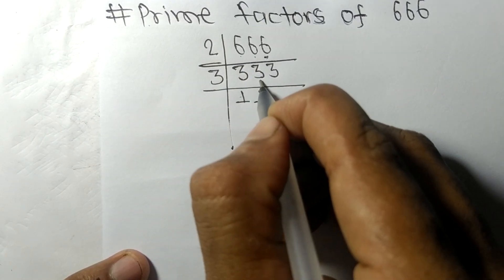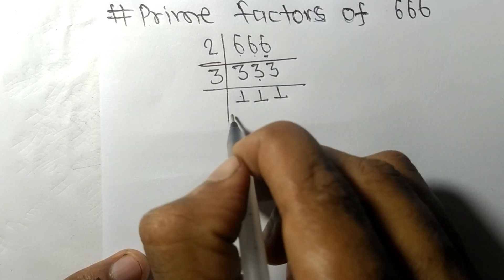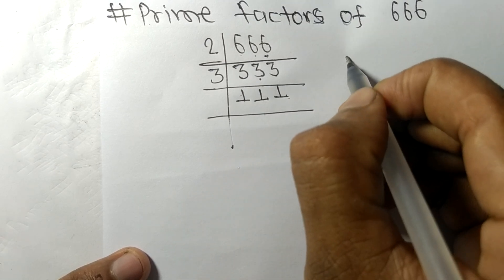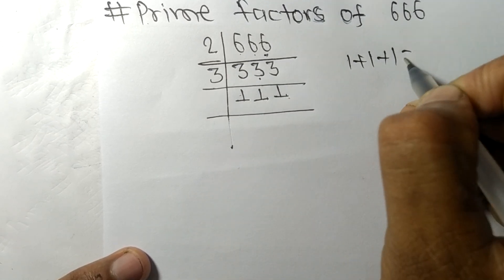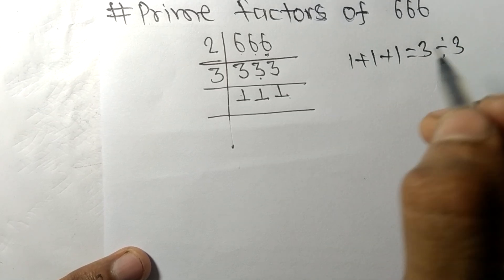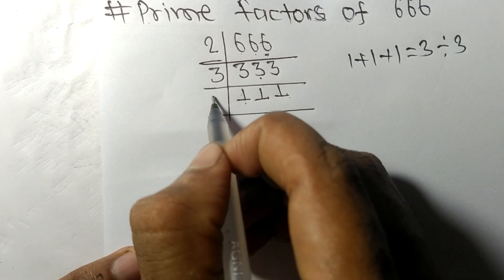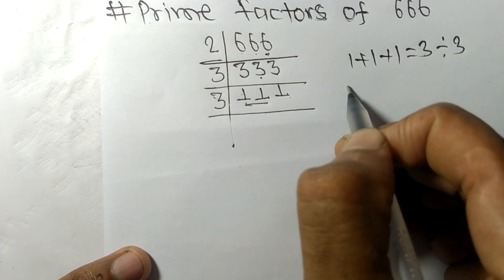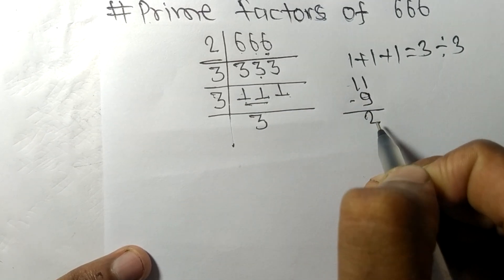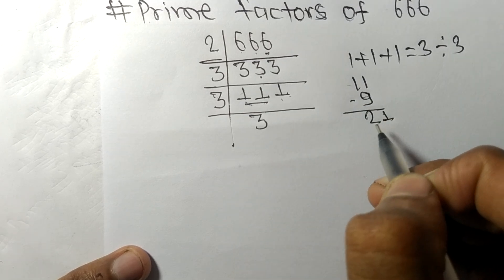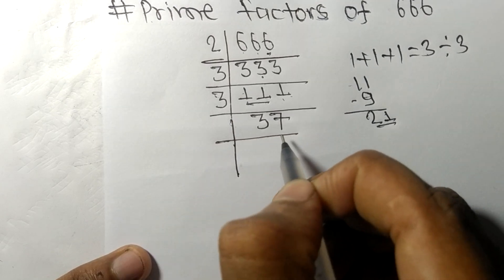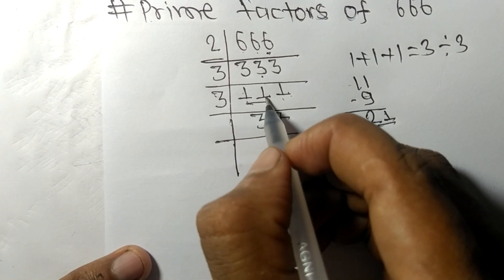Dividing 333 by 3 gives us 111. When we add all the digits of 111, that is 1 plus 1 plus 1, we get 3, and 3 is exactly divisible by 3, so 111 is also divisible by 3. Performing the division: 3 times 3 is 9, remainder 2, and 3 times 7 is 21, giving us 37 on dividing 111 by 3.